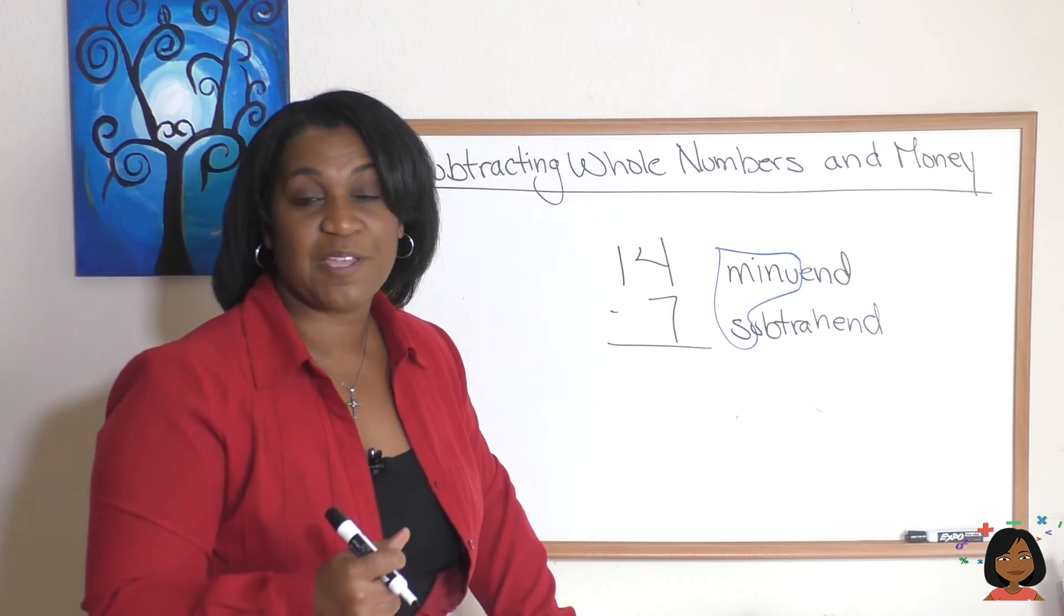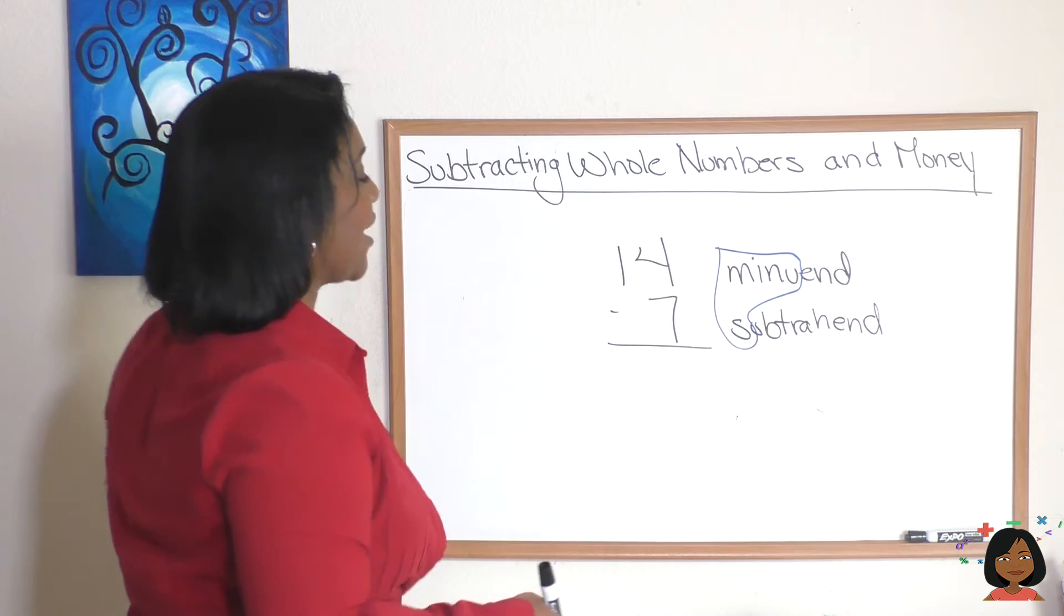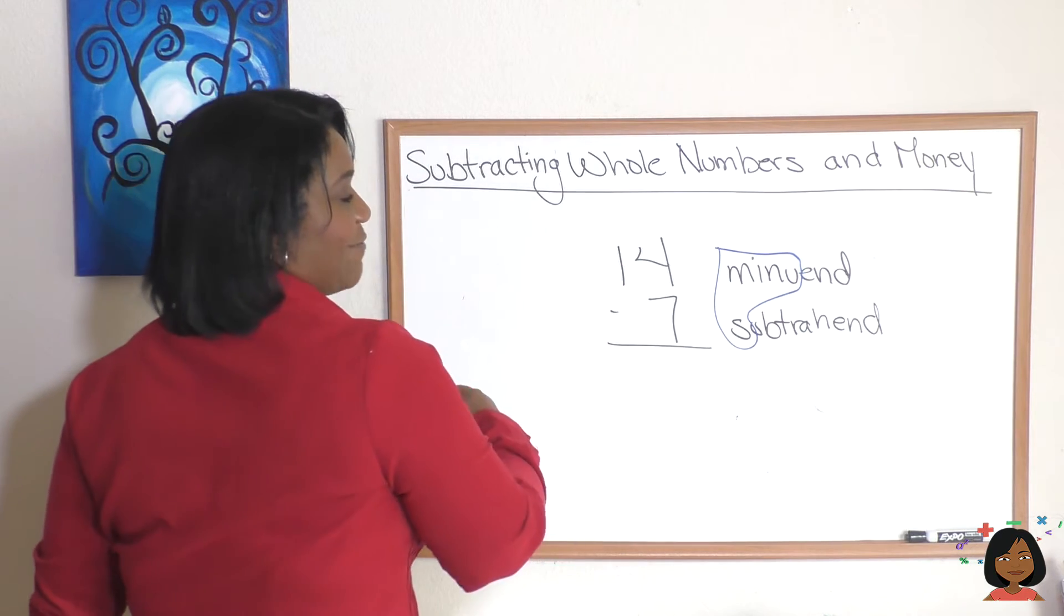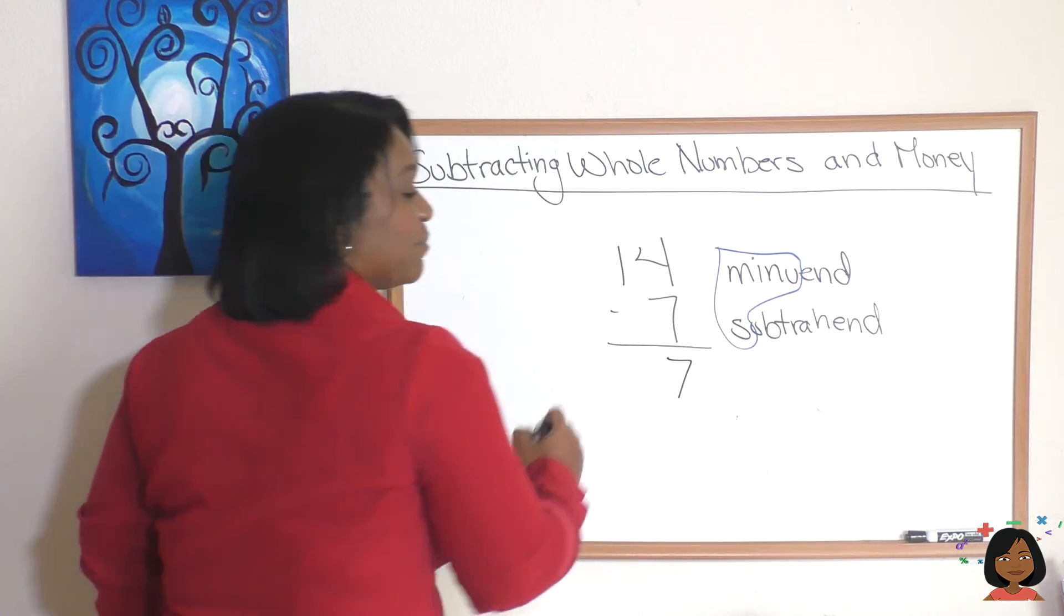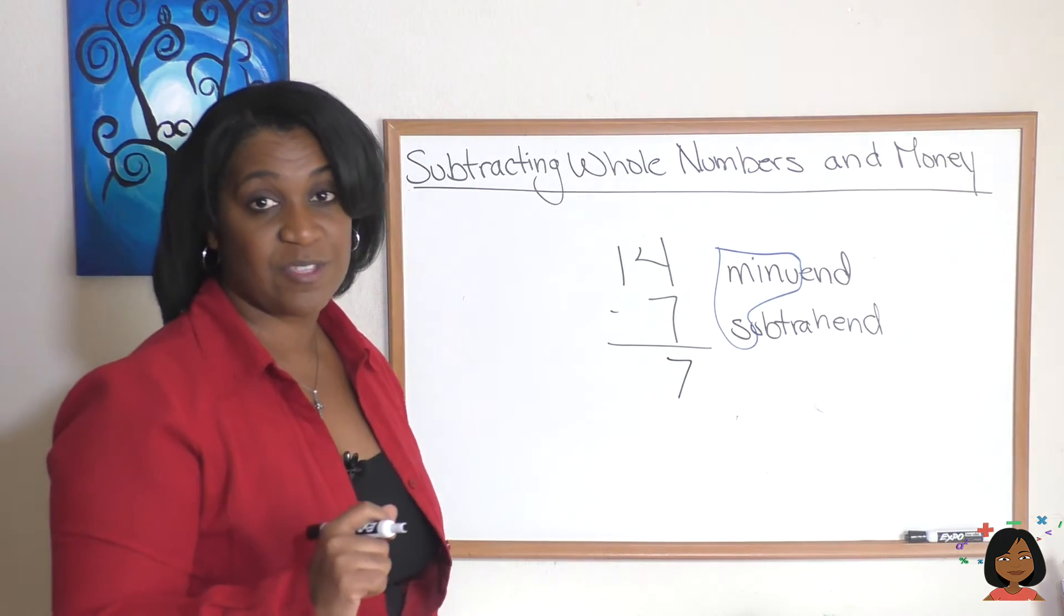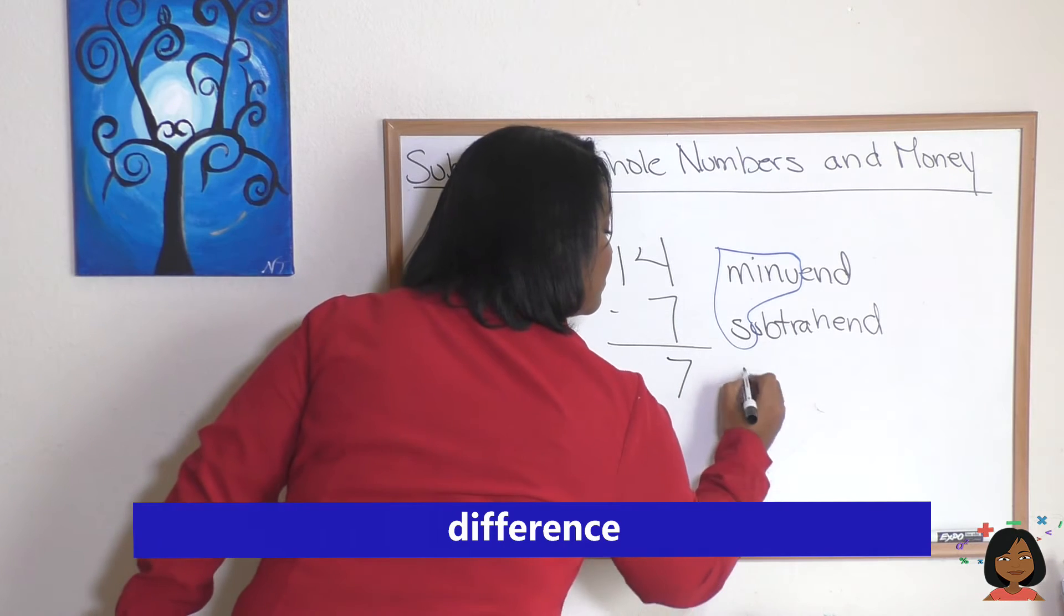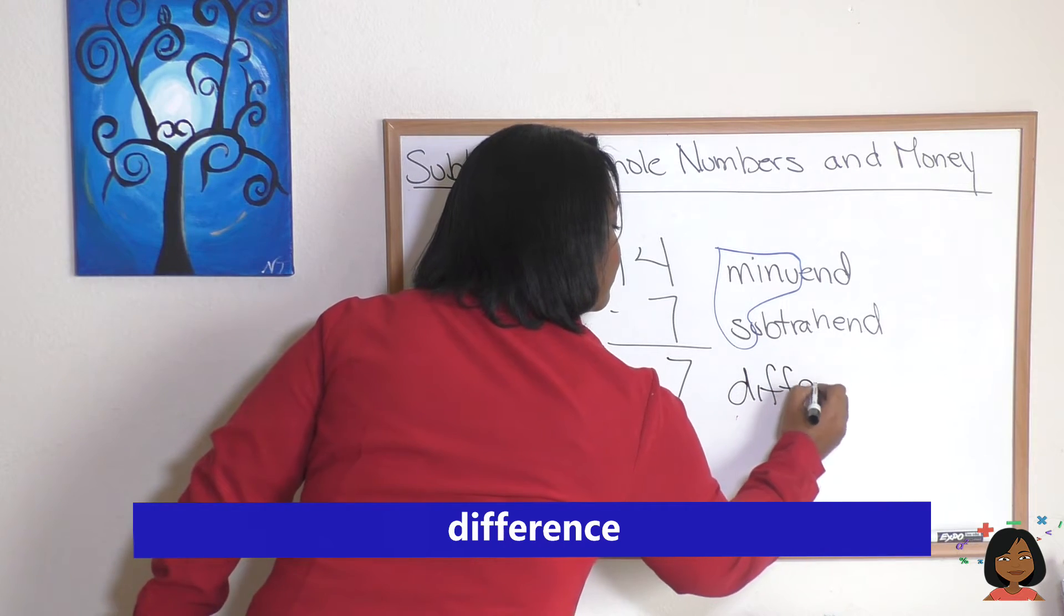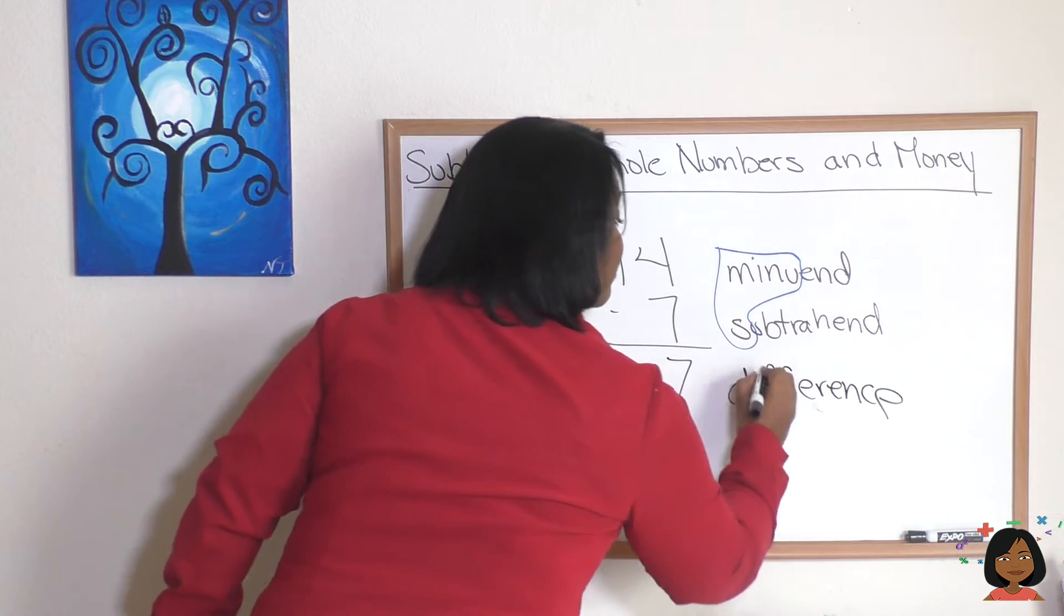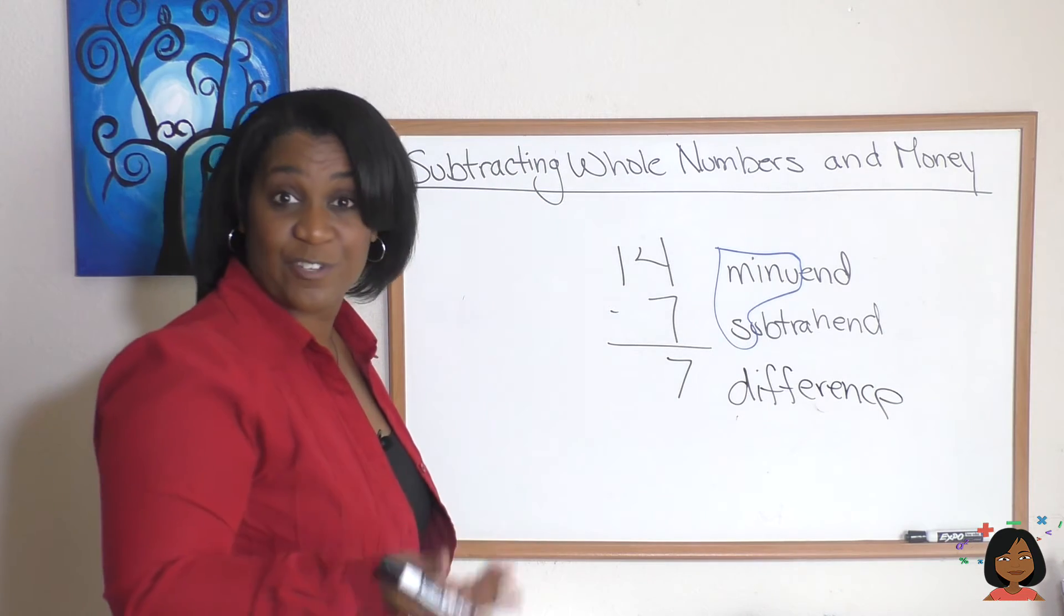Let's keep it going. Let's do our subtraction: 14 minus 7 is 7, and this has a special name in math as well, it is called the difference. So there are your terms for subtraction.